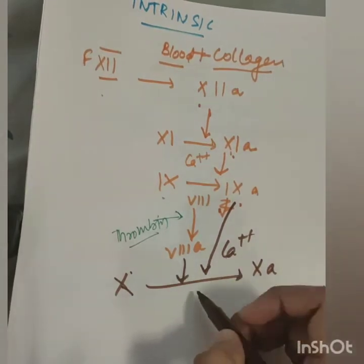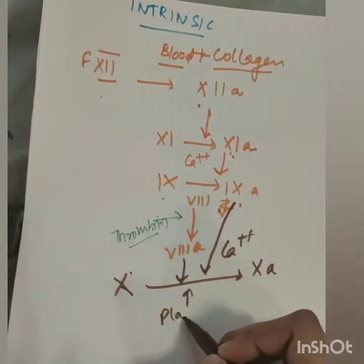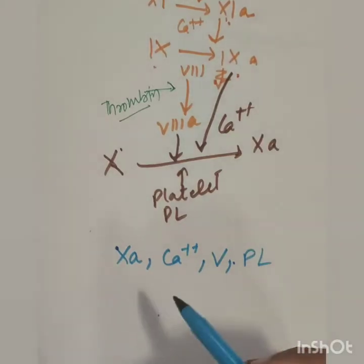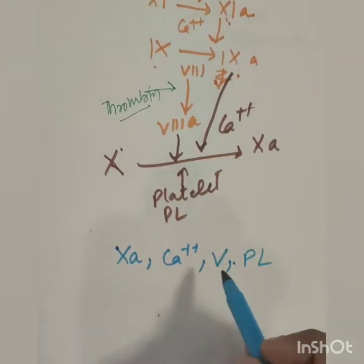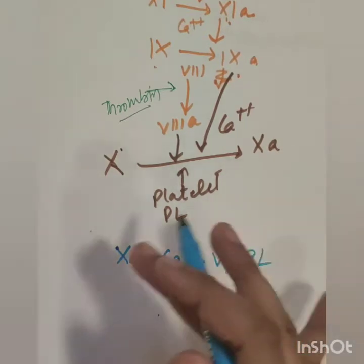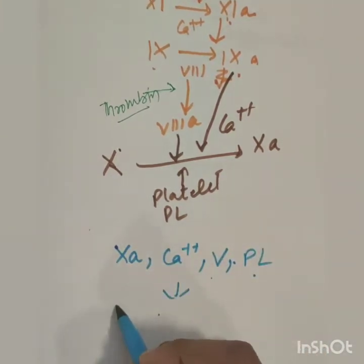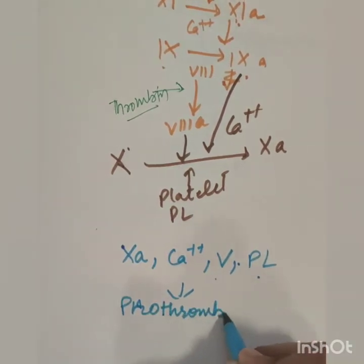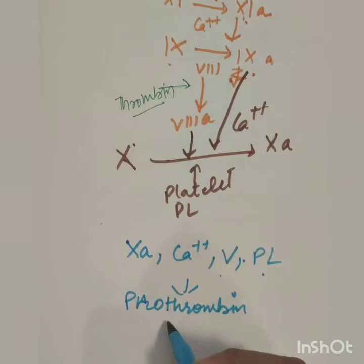This is the 10th factor with the platelet. Basically, the 10th factor is activated with calcium. The 5th factor is the phospholipids. What do we make? Prothrombin activator. This is the main factor.